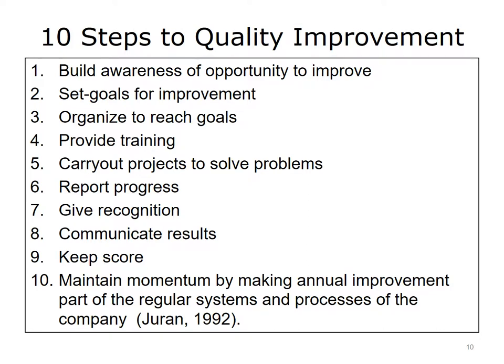Juran's 10 Steps to Quality Improvement are: 1. Build awareness of opportunity to improve. 2. Set goals for improvement. 3. Organize to reach goals. 4. Provide training. 5. Carry out projects to solve problems. 6. Report progress. 7. Give recognition. 8. Communicate results. 9. Keep score. 10. Maintain momentum by making annual improvement part of the regular systems and processes of the company.